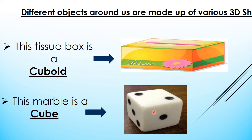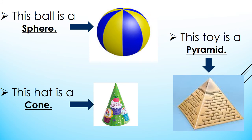Now look at this marble. You can see the top face is a square, the side face is a square, the front face is a square — all the faces are squares. When you join squares together, you get a cube. So this marble is a cube. And whenever we are talking about a ball or a balloon — a perfectly circular ball — what comes to mind? A sphere. This ball is a sphere.